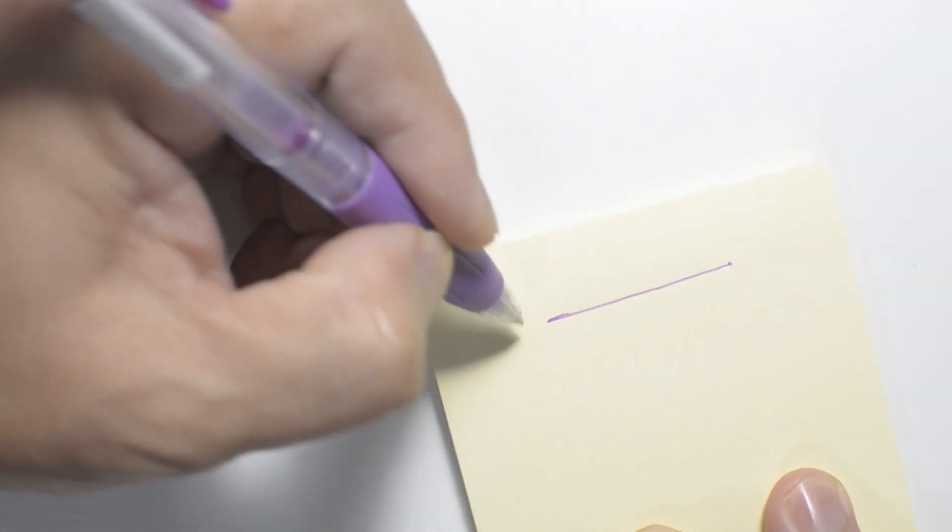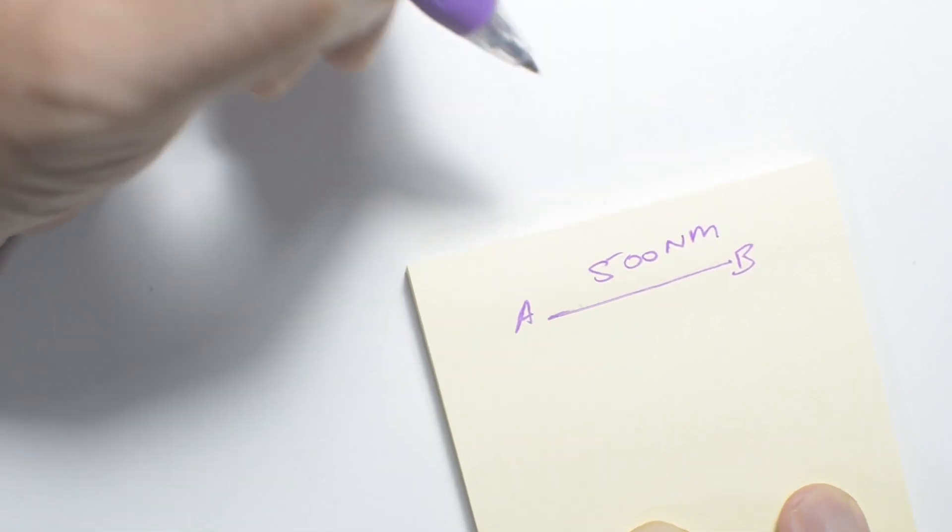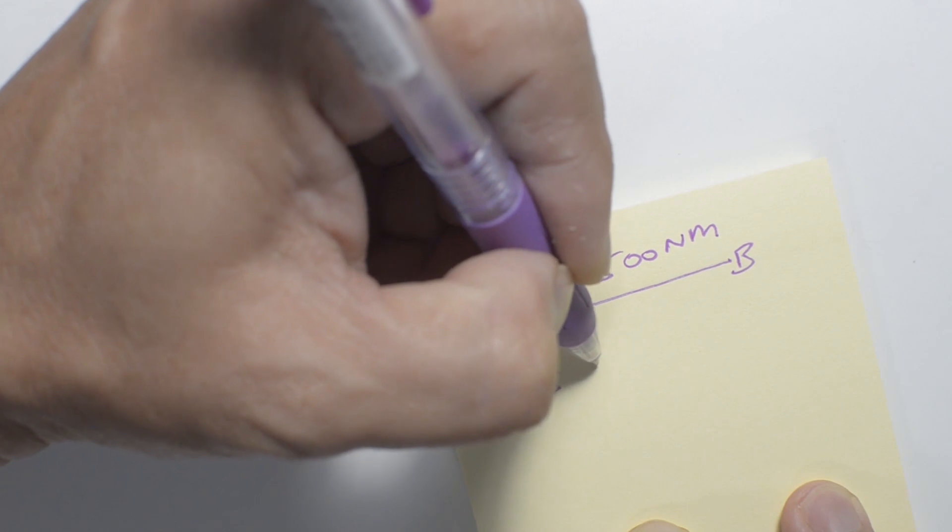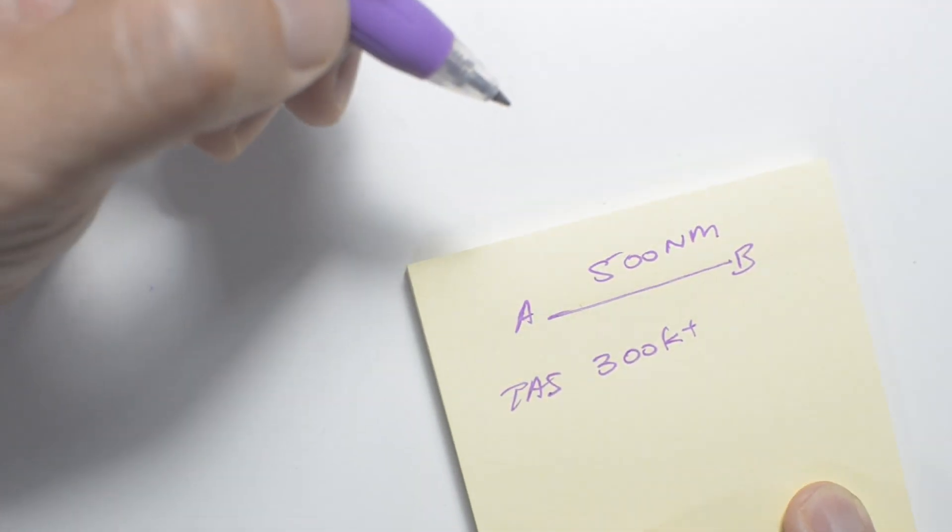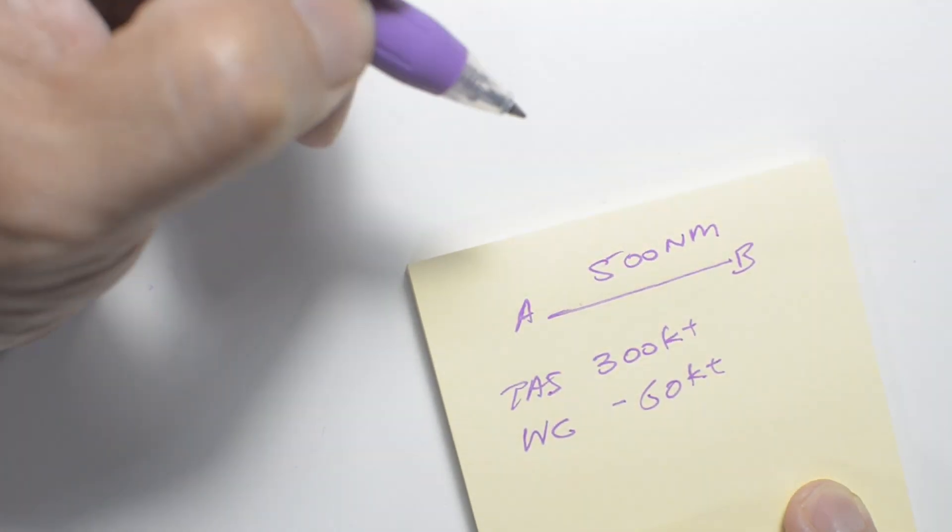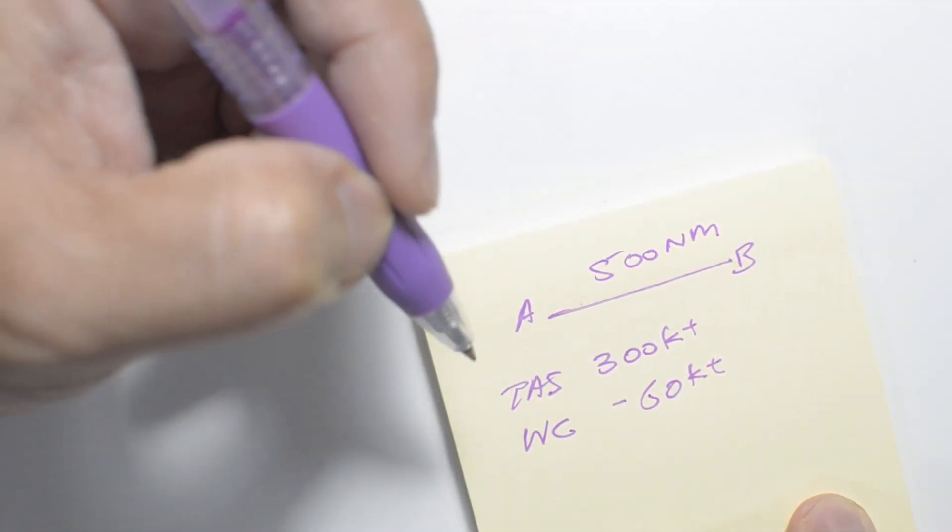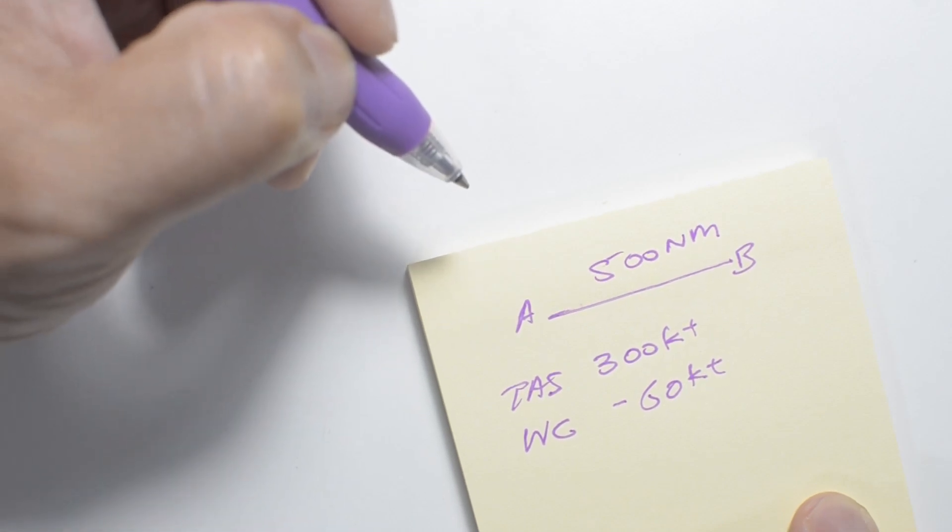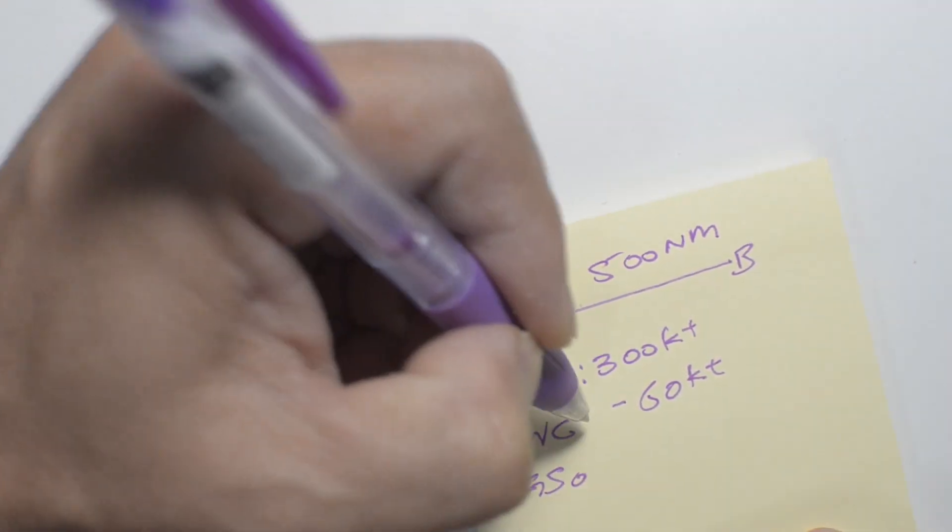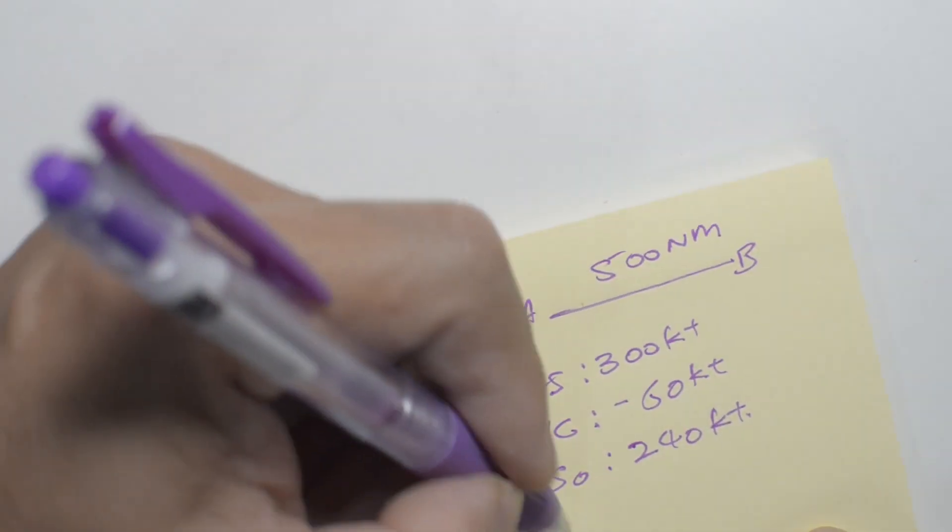Let's assume that our distance from A to B is 500 nautical miles. True airspeed is 300 knots. And we have a wind component of 60 knots. Negative means it's a headwind component, positive means it's a tailwind component going outward.